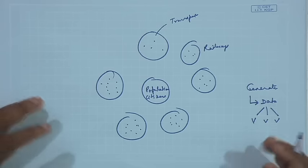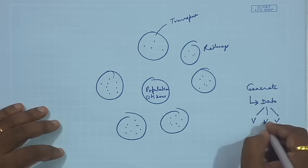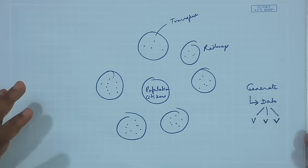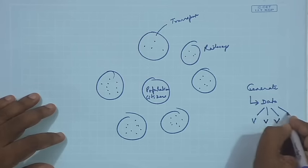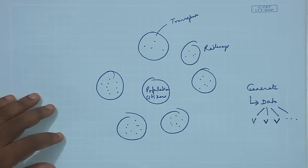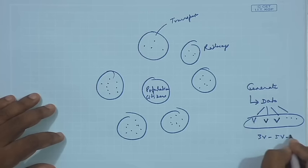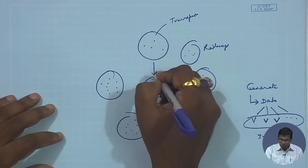This data has different characteristics with respect to volume — it is gigantic, with huge volumes generated from each of these different components, coming at high velocities. It has different types: multimedia data, text data, and so on. These are the characteristics of big data — three V's to five V's to seven V's — which we spoke about in a previous lecture.